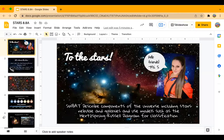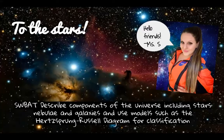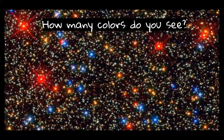Hey everybody, I'm Ms. Schramm, and we are talking all about the Hertzsprung-Russell diagram. By the end of my section, you'll be able to use the HR diagram to help you classify stars. Our two essential questions today are: what does the Hertzsprung-Russell diagram show, and what are the four main regions of the HR diagram? First, I want you to look at a picture of a bunch of stars. How many colors do you see? Hopefully you're seeing white, yellow, orange, red, and blue.